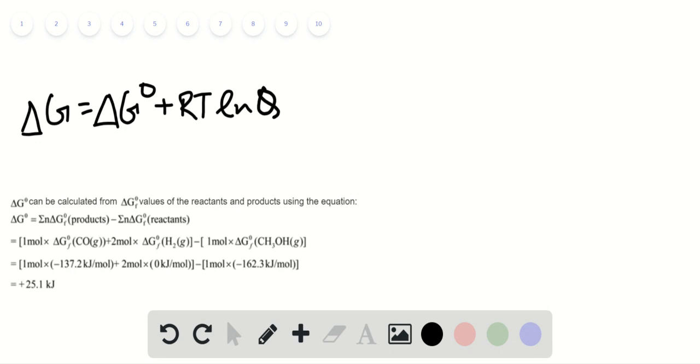Using that formula, we have the delta G for the provided coefficient as positive 25.1 kJ. From the question we are already provided with the partial pressure of three elements.